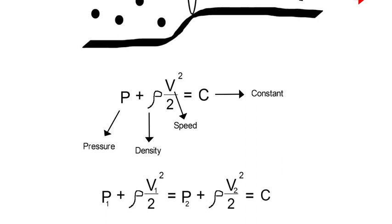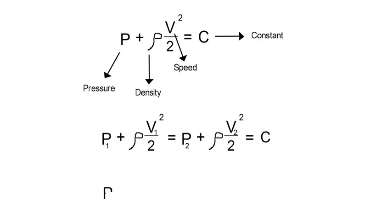From this, I can deduce that if P1 is bigger than P2, then V2 will be bigger than V1 and vice versa. It goes both ways. If V2 is bigger than V1, I can know that P1 will be bigger than P2. This was, in principle, Bernoulli's principle.